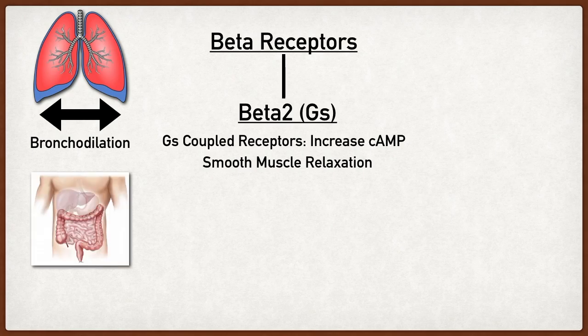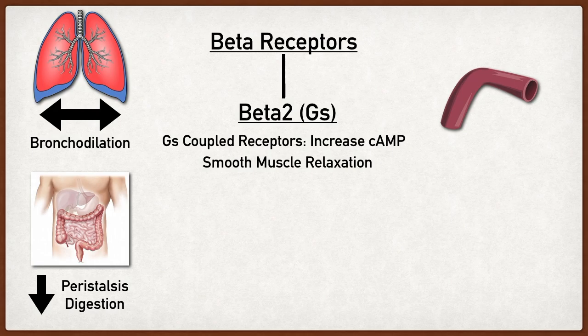Another example is in the GI tract. There are beta 2 receptors that line the intestines. During a situation of danger, digestion isn't important for immediate survival, so activation of these beta 2 receptors leads to smooth muscle relaxation, decreasing peristalsis of the intestines and ultimately decreasing digestion. Beta 2 receptors are also found on blood vessels. Activation leads to smooth muscle relaxation and vasodilation. There are increased numbers of beta 2 receptors on arteries that supply skeletal muscles as well as the coronary arteries, increasing blood flow to the heart and skeletal muscles during fight-or-flight.